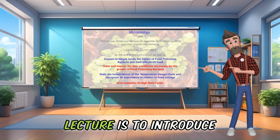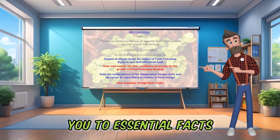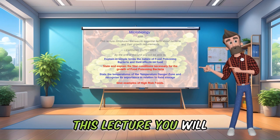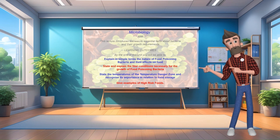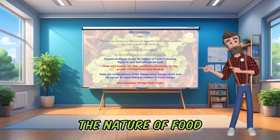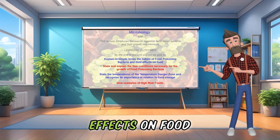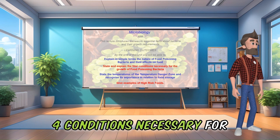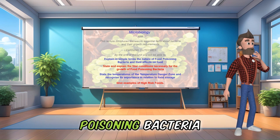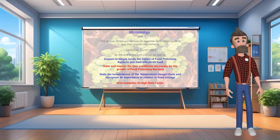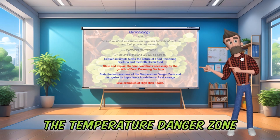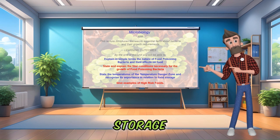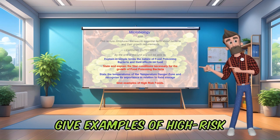The aim of this lecture is to introduce you to essential facts about bacteria and their growth requirements. By the end of this lecture, you will be able to: explain in simple terms the nature of food poisoning bacteria and their effects on food; state and explain the four conditions necessary for the growth of food poisoning bacteria; state the temperatures of the temperature danger zone and recognize its importance in relation to food storage; and give examples of high-risk foods.